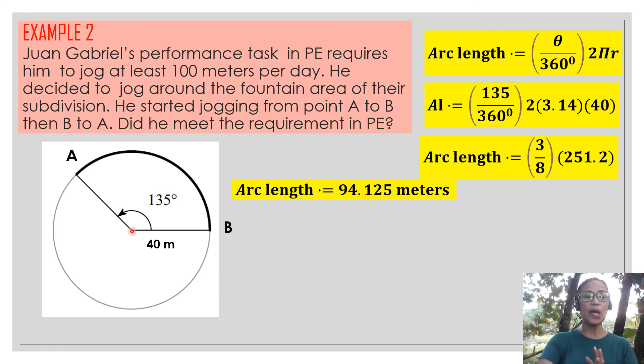But remember that arc length is only from point A to point B. But remember, Juan Gabriel jogged from point A to point B, then B to point A. So which means we have to double that length, so multiplying it by 2, we have 188.25 meters.